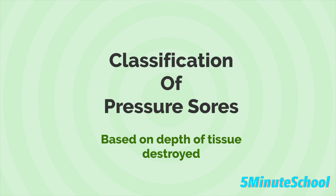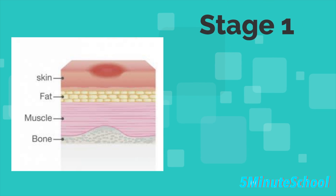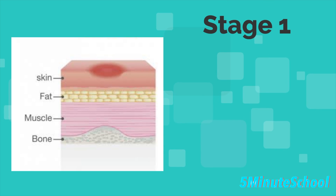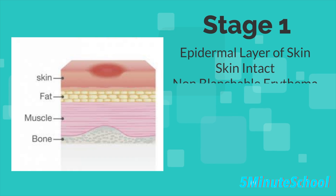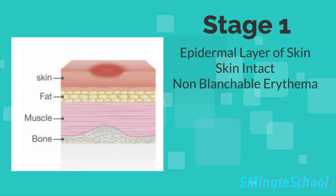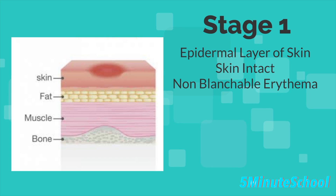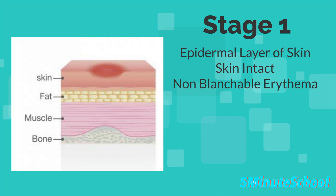We can classify pressure ulcers in four different stages, always based on the depth of tissue destroyed. Stage one involves the epidermal layer of the skin. The skin is intact but there is redness, called erythema, in the affected area. This redness is non-blanchable, so when you press it, it doesn't turn white. It usually occurs over a bony prominence.